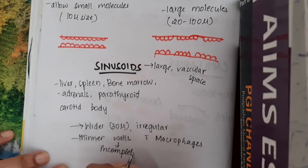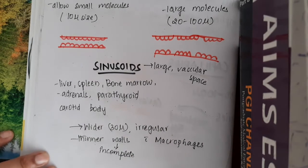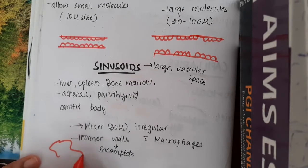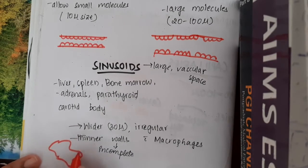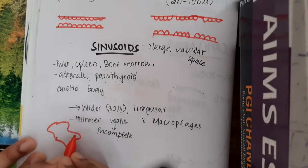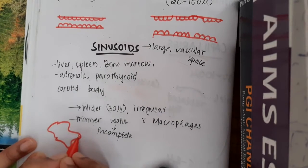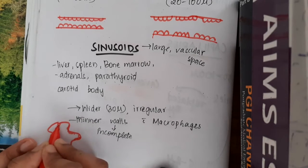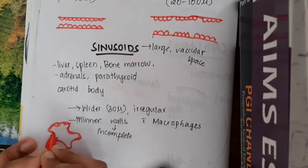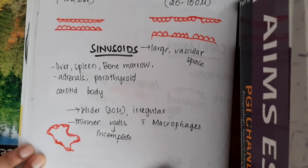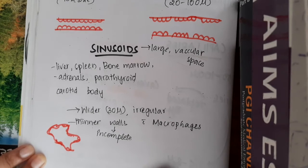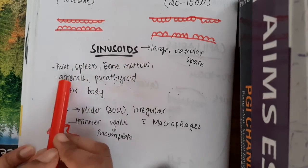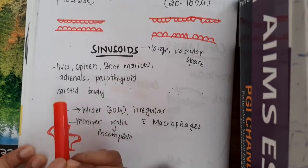These thinner walls are also lined by macrophages. This sinusoid has irregular and wider shape with thinner, incomplete walls with small holes. These sinusoids are present in liver, spleen, bone marrow, adrenals, parathyroid, and carotid body.